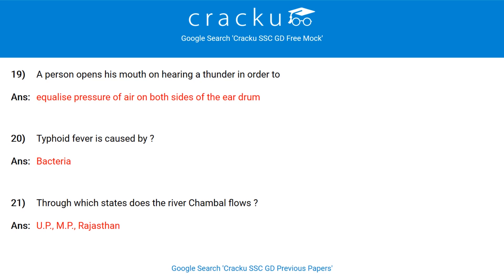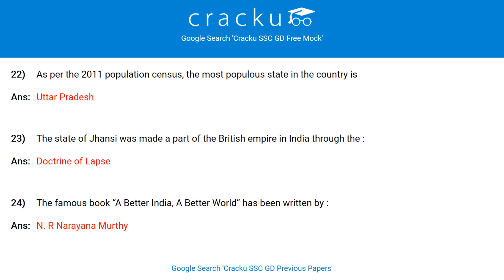A person opens his mouth on hearing thunder in order to equalize pressure of air on both sides of the eardrum. Typhoid fever is caused by bacteria. Through which states does the river Chambal flow? Uttar Pradesh, Madhya Pradesh and Rajasthan. As per 2011 population census, the most populous state in the country is Uttar Pradesh. The state of Jhansi was made a part of the British Empire in India through the Doctrine of Lapse.